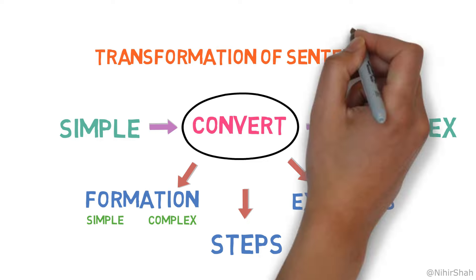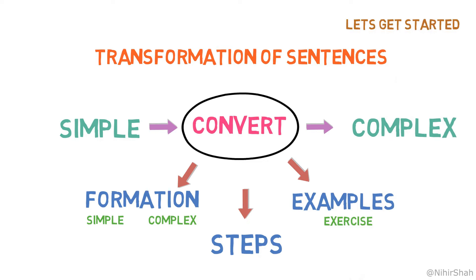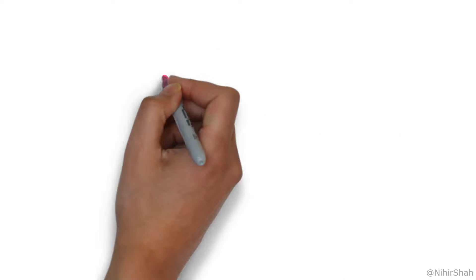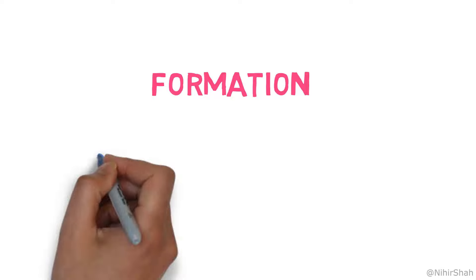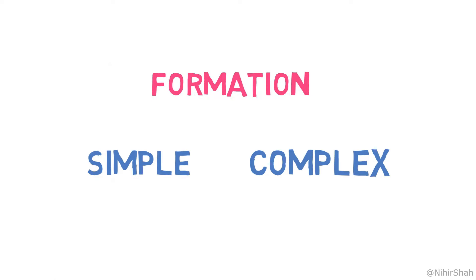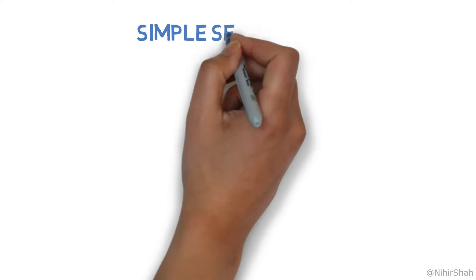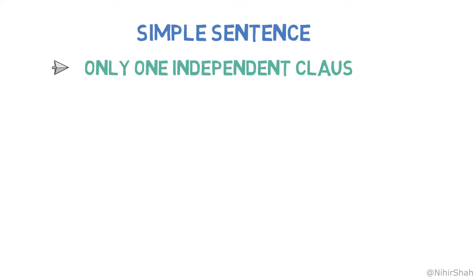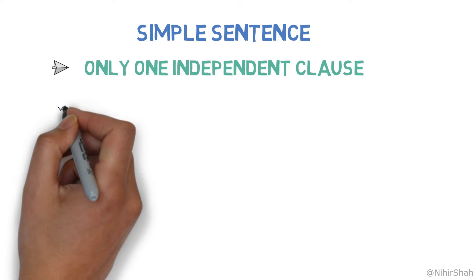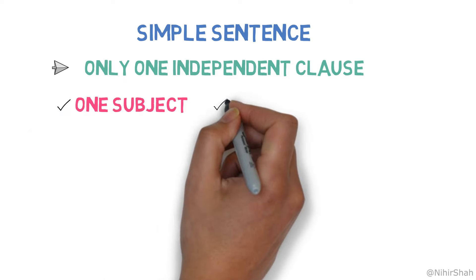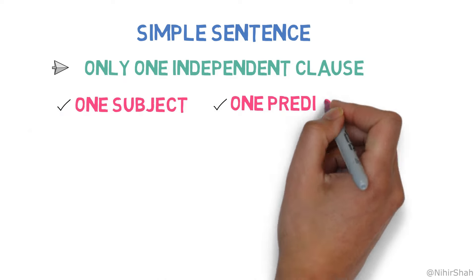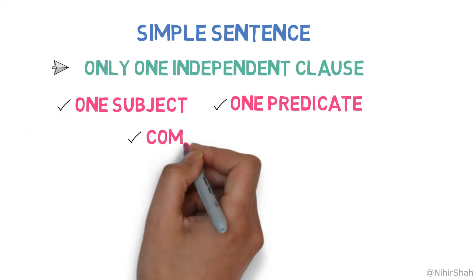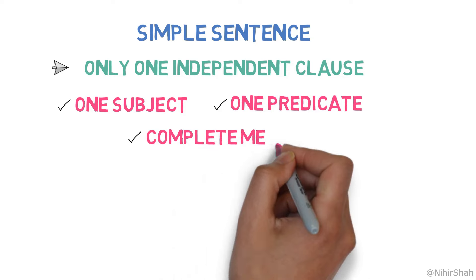Without further ado, let's get started. Let's first learn the formation of simple and complex sentences. What is a simple sentence made of? A simple sentence has only one independent clause.